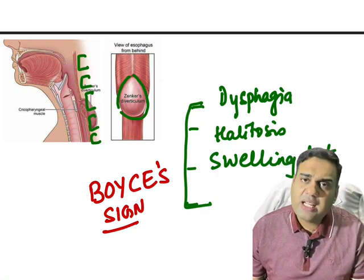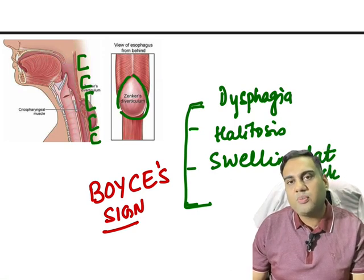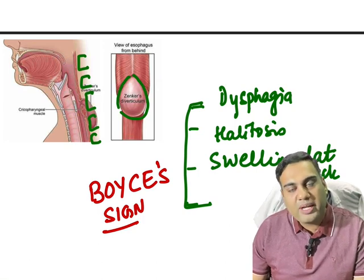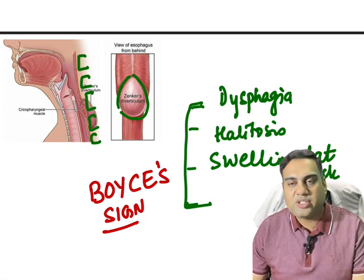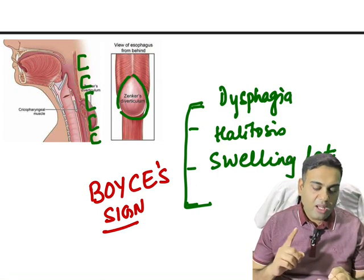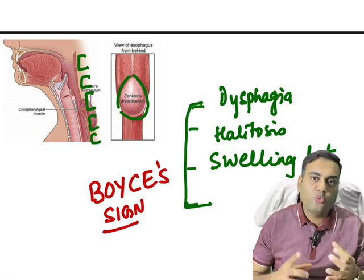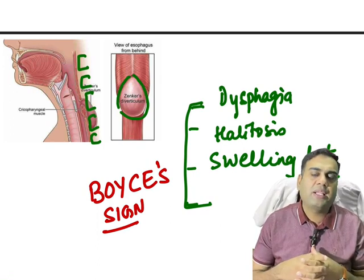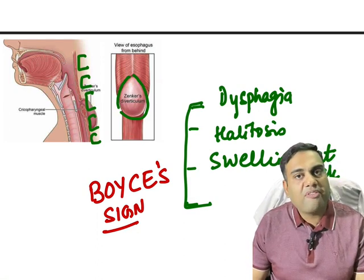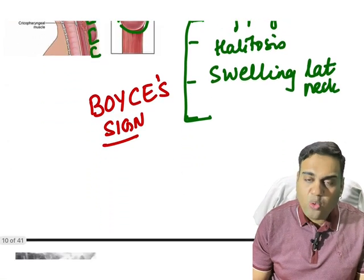If the diverticulum stays for a very long time, can it cause malignancy? Yes it can, but the transformation rate is very slow — potential for malignancy but very low chances. It is more common in old age patients and those with neuromuscular disorders, because they cannot coordinate their muscles — weak muscles and weak peristalsis.